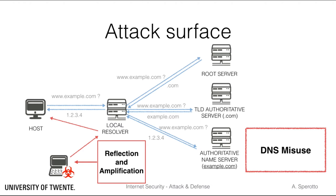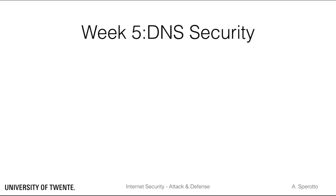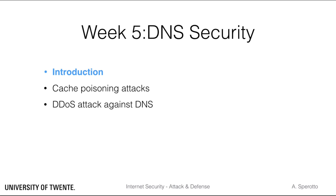In this lecture, we will see examples of these three categories of attacks. This week, we will explore the following topics. After this introduction, we will look at some examples of attacks against the DNS system. Cache poisoning attacks are an example of attacks on the DNS information. DDoS attacks against the DNS are instead an example of attacks on the infrastructure. Then, we will investigate how the DNS security extensions could be misused for distributed denial of service attacks. Finally, we will summarize.